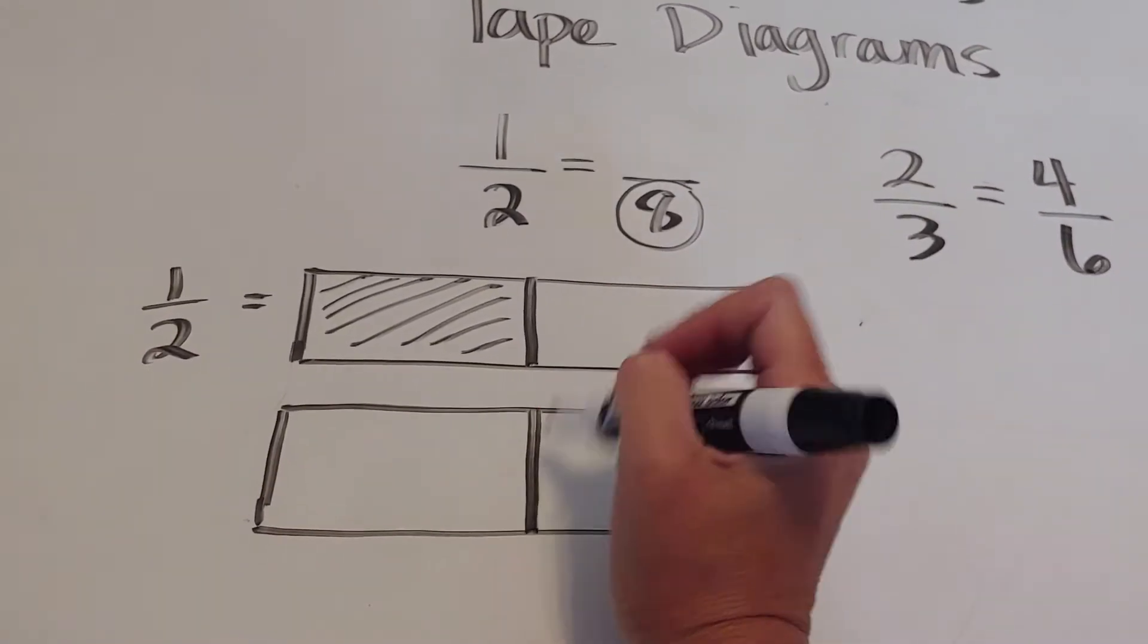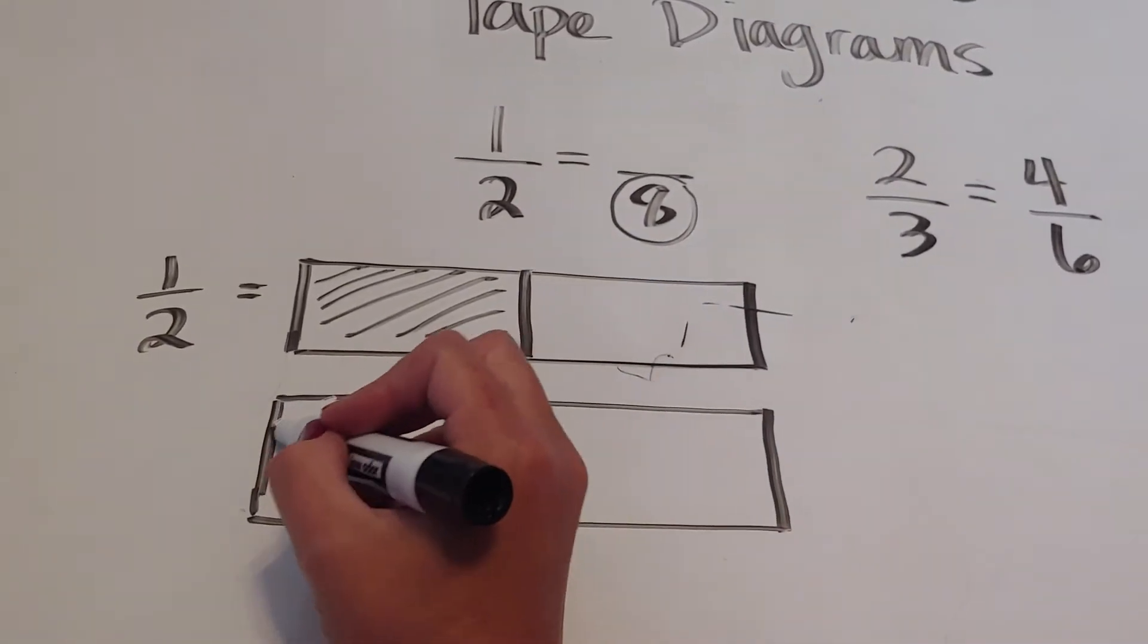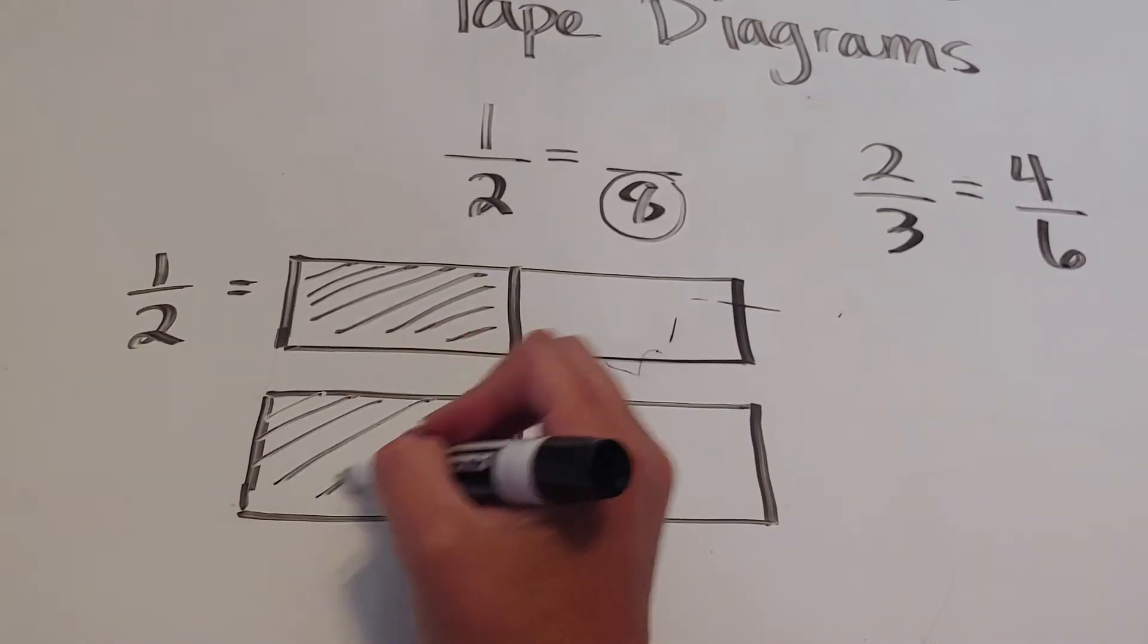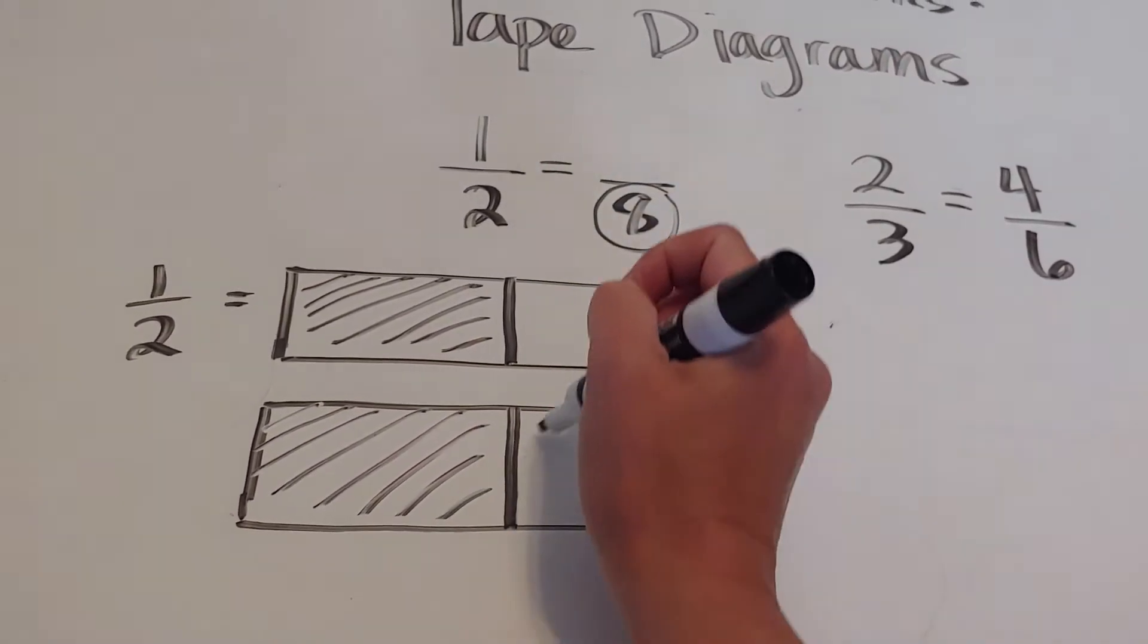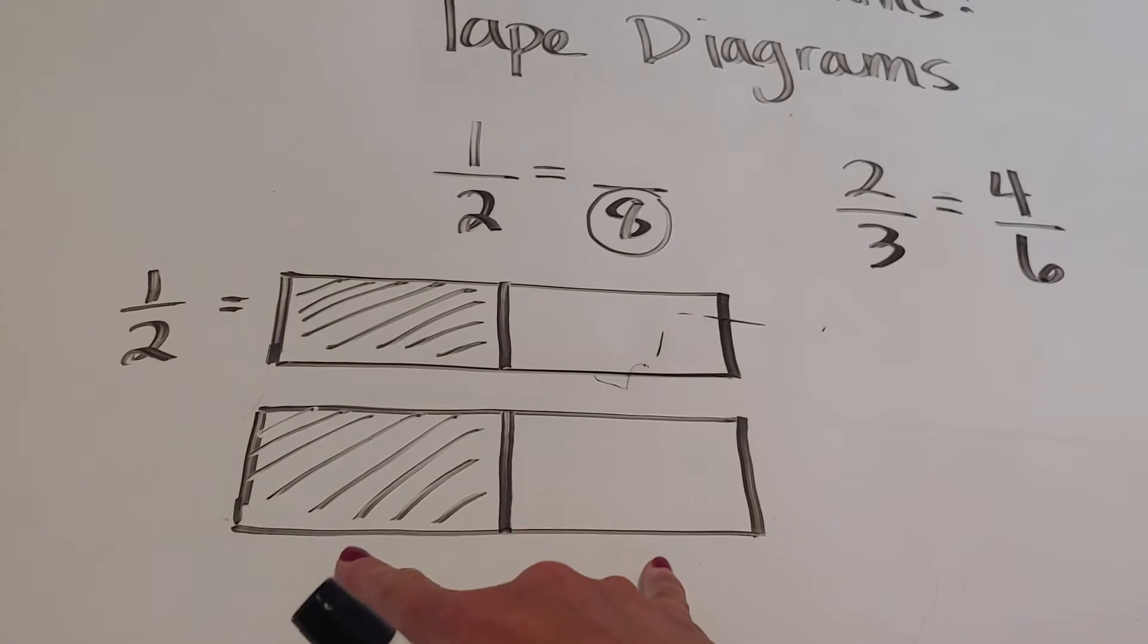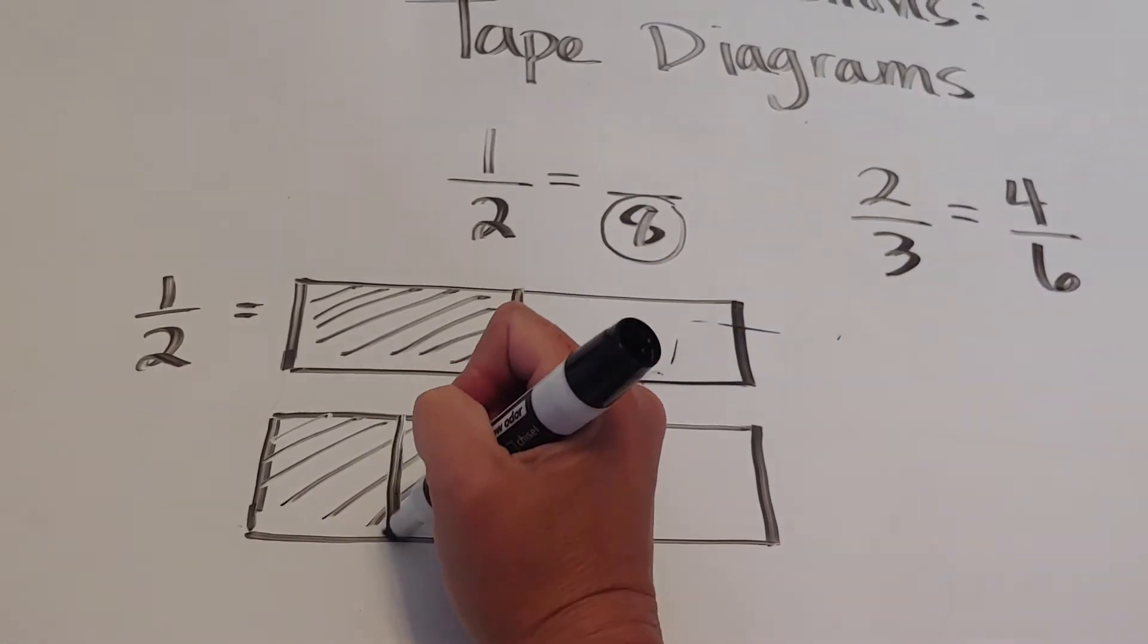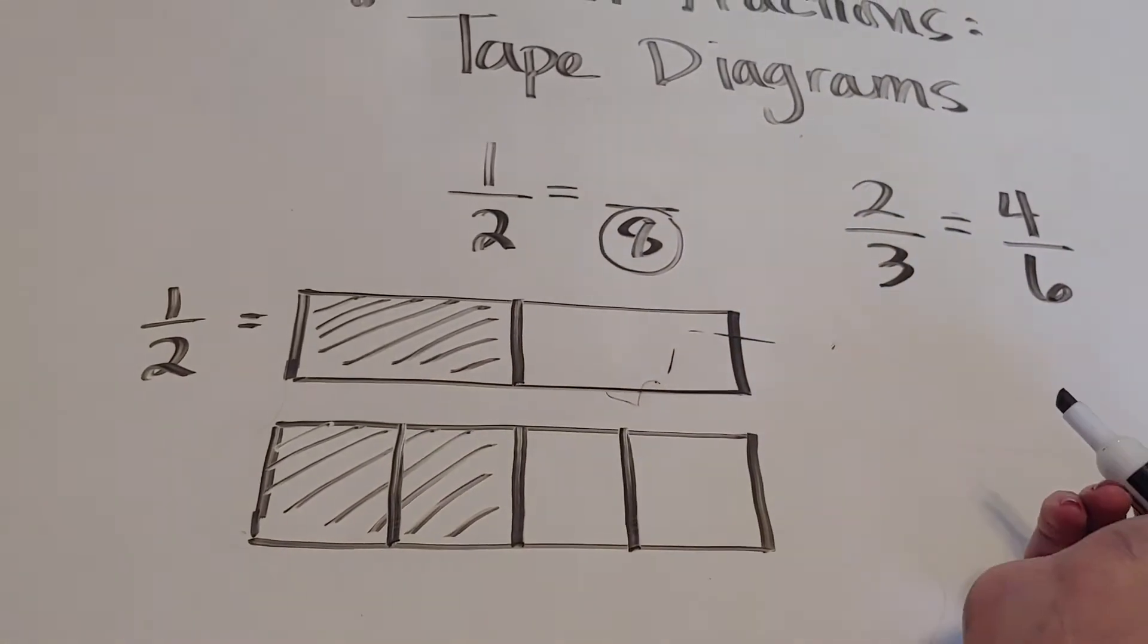So I'm going to come in here and this is our shaded region, right? But I want this to not be in two pieces but eight pieces. So I'm going to come in. Now it's in four pieces.